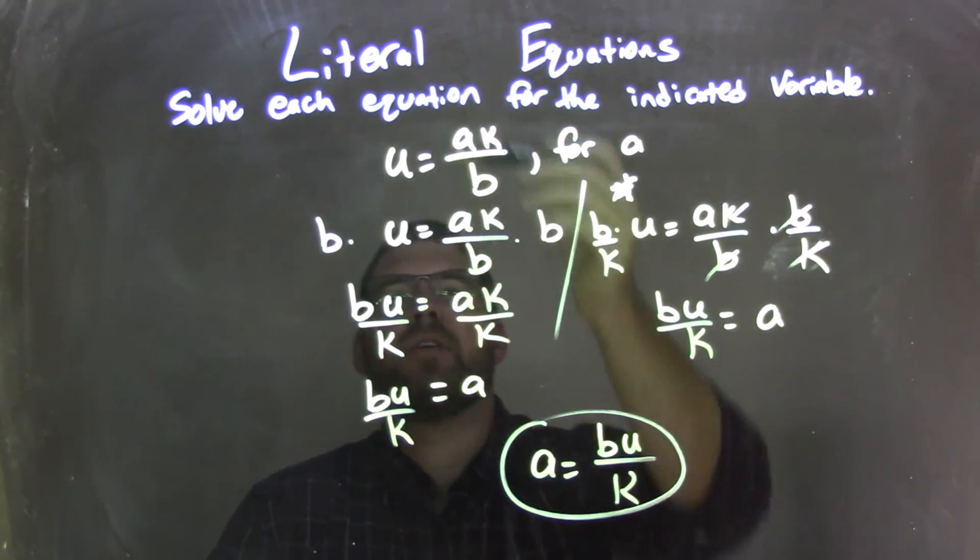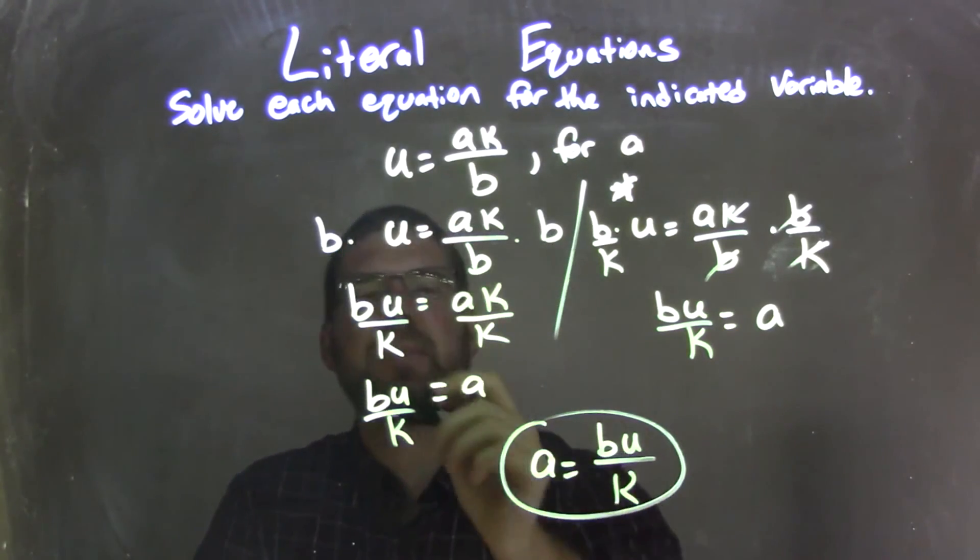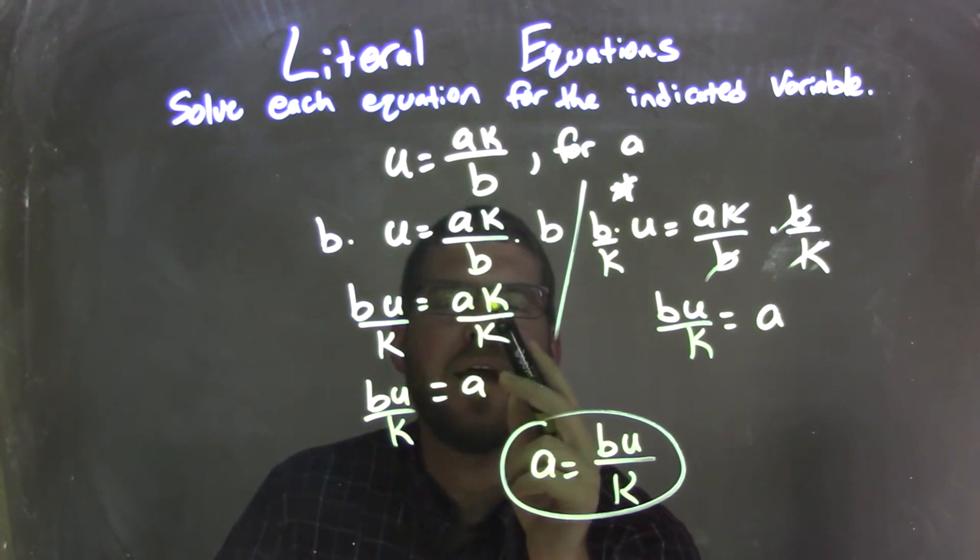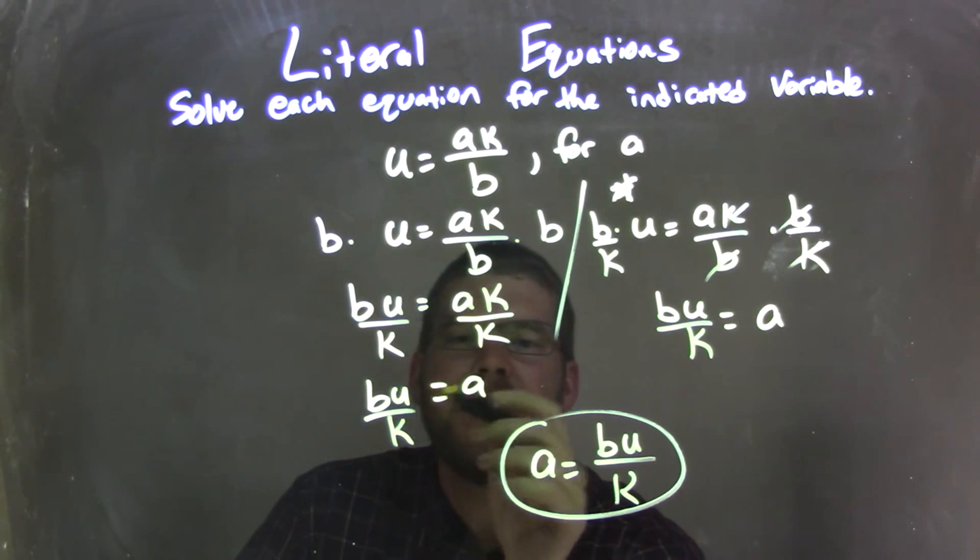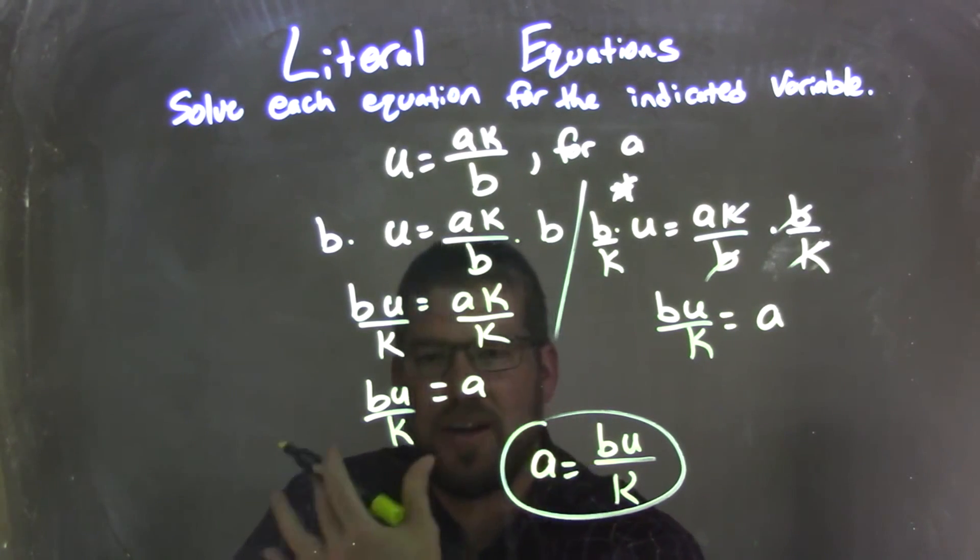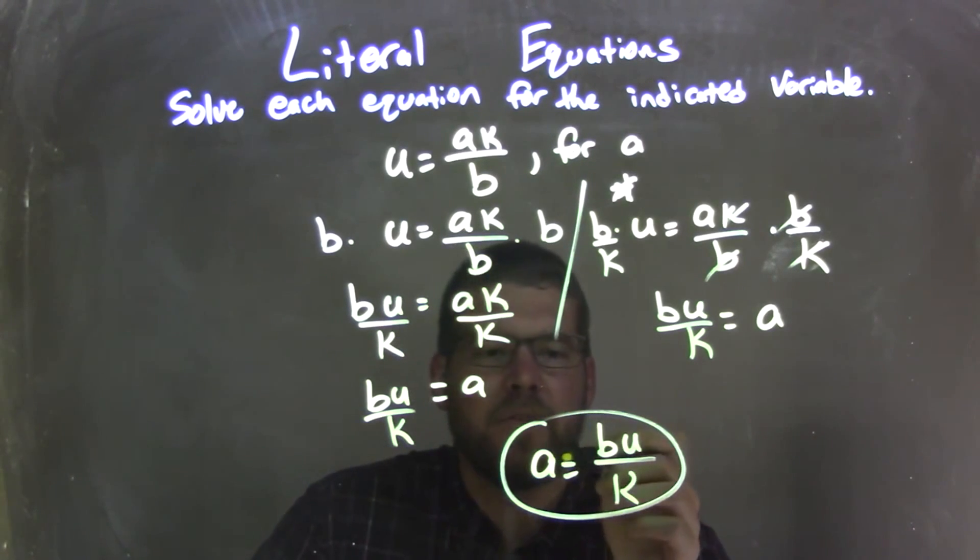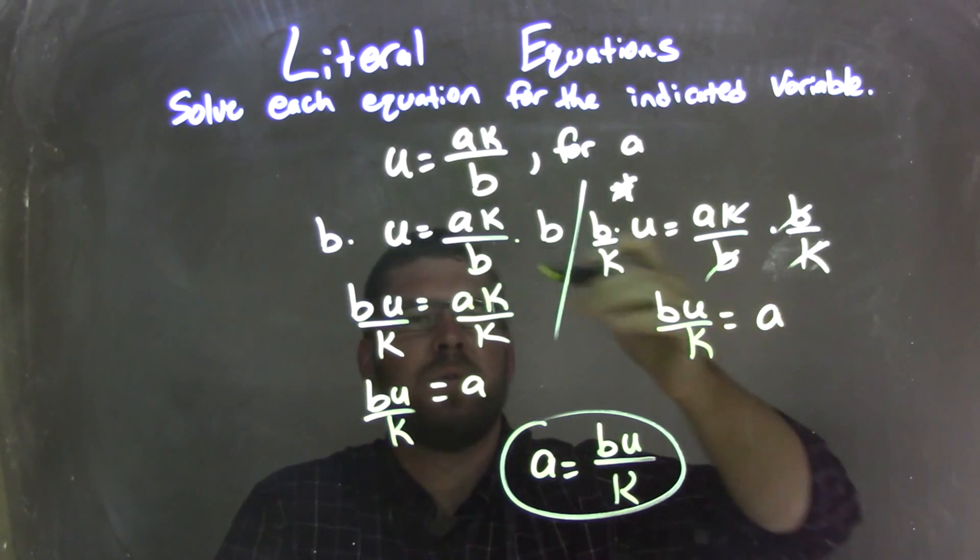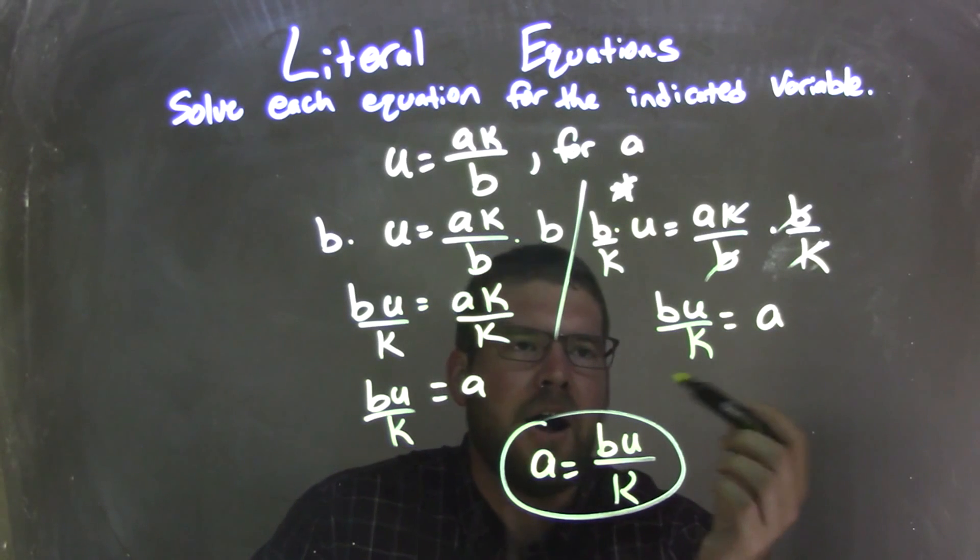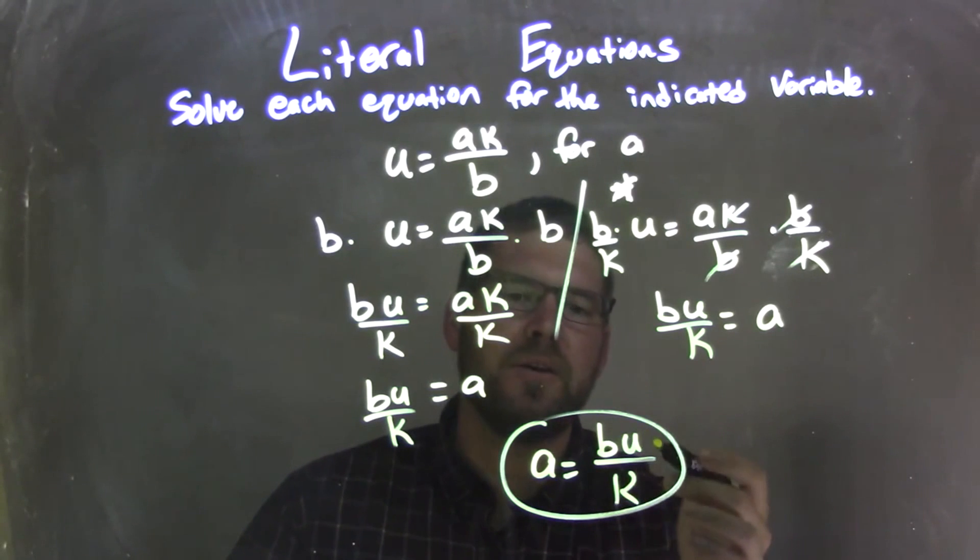So let's recap. We're given U equals AK over B, and we're solving that for A. I multiplied both sides by B, leaving me with BU on the left equals AK on the right. Then I divided by K on both sides, leaving me with BU over K on the left, and A by itself on the right. A is isolated. We're basically done. I rewrote that to have A come first because that looks nice and neat. And so we're left with the final answer here of A equals BU over K. And there was another little method we did, basically doing two steps, the division and multiplication at the same time by just multiplying by a fraction. If you want to do it that way, you totally could have. But either way, my final answer here is A equals BU over K.